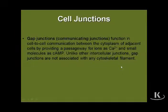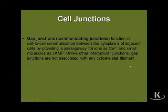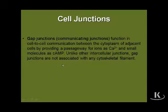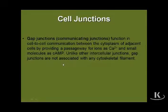Gap junctions are the communicating junctions — they function in cell-to-cell communication. They consist of small arrays of connexin proteins that line up to form a connexon, which is a tubular channel through which small ions such as calcium and small low-molecular-weight molecules such as second messengers, including cyclic AMP, may pass. Gap junctions are the only junctional specialization not associated with any cytoskeletal element in the adjacent cytoplasm.